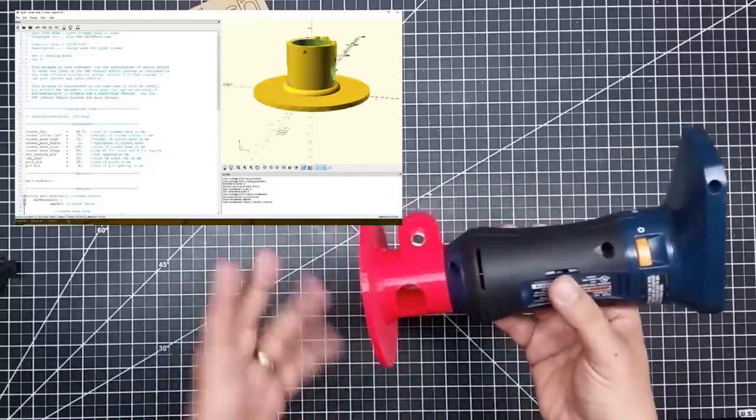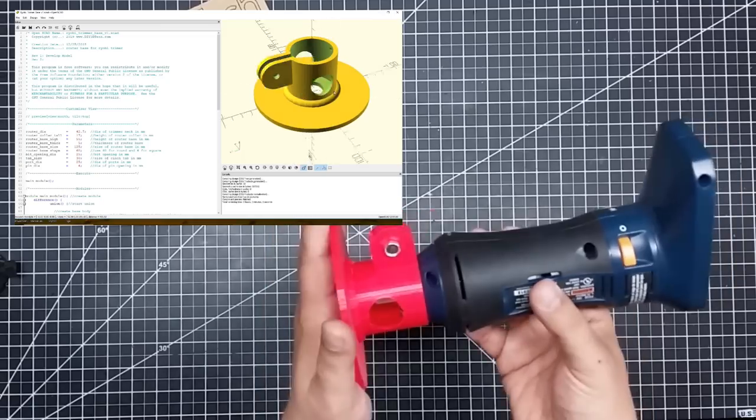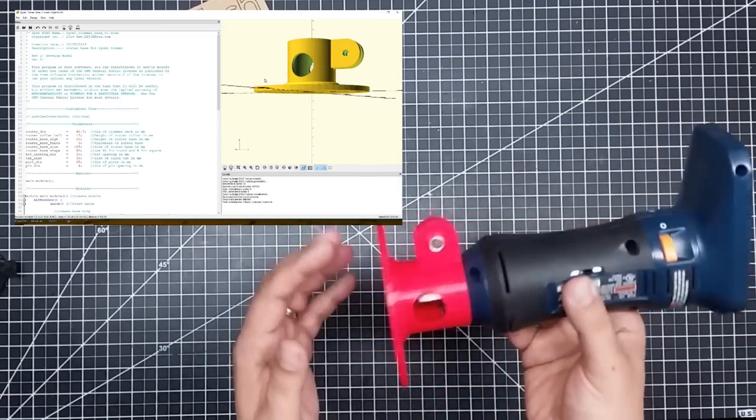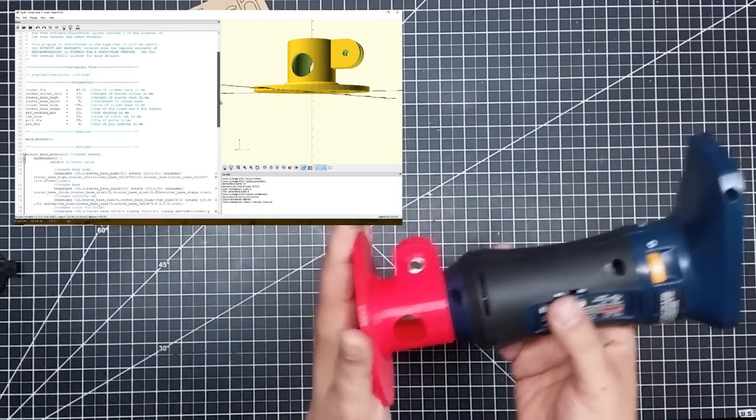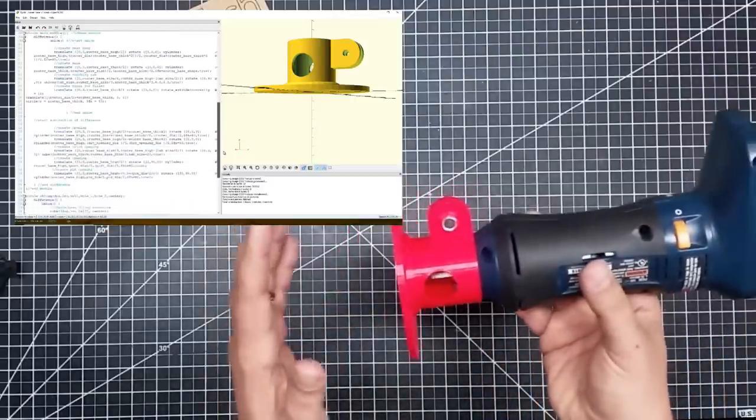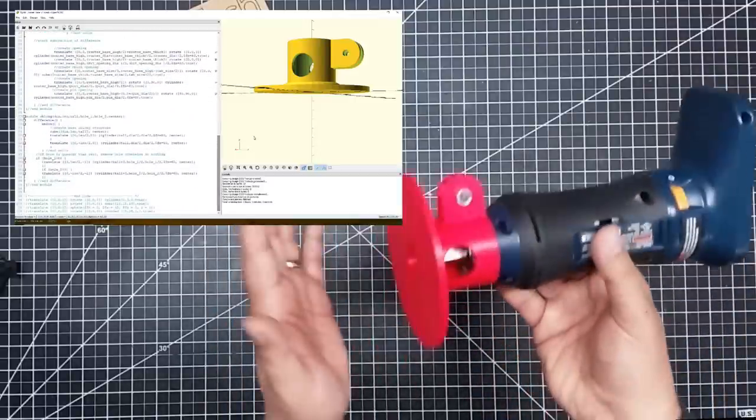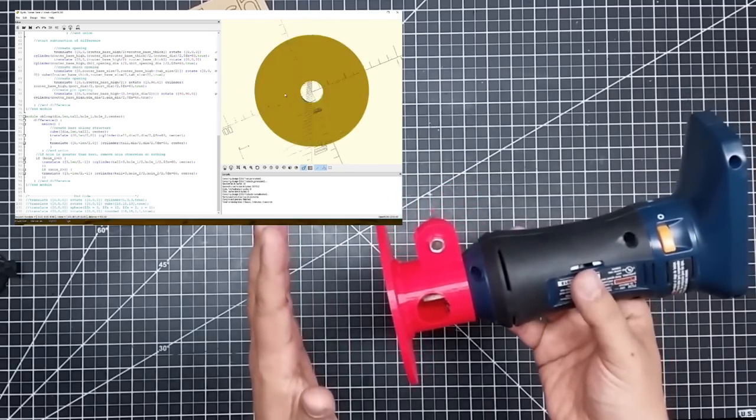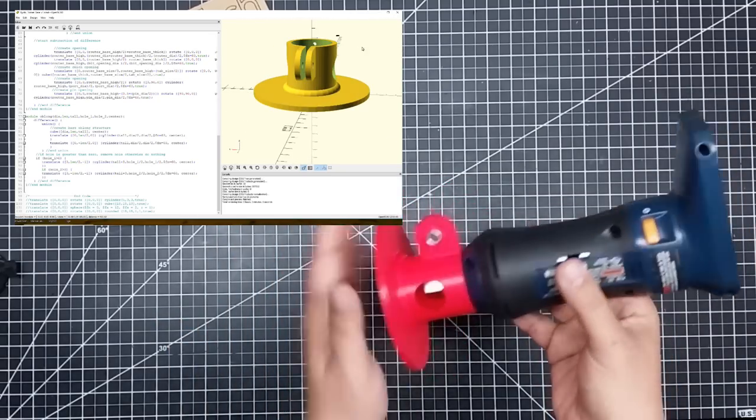So I could have also done this in Fusion 360. I found I could do it faster in OpenSCAD simply because I had a bunch of modules already for a project similar to this. So what I did is I just modified the code a little bit to come up with this.